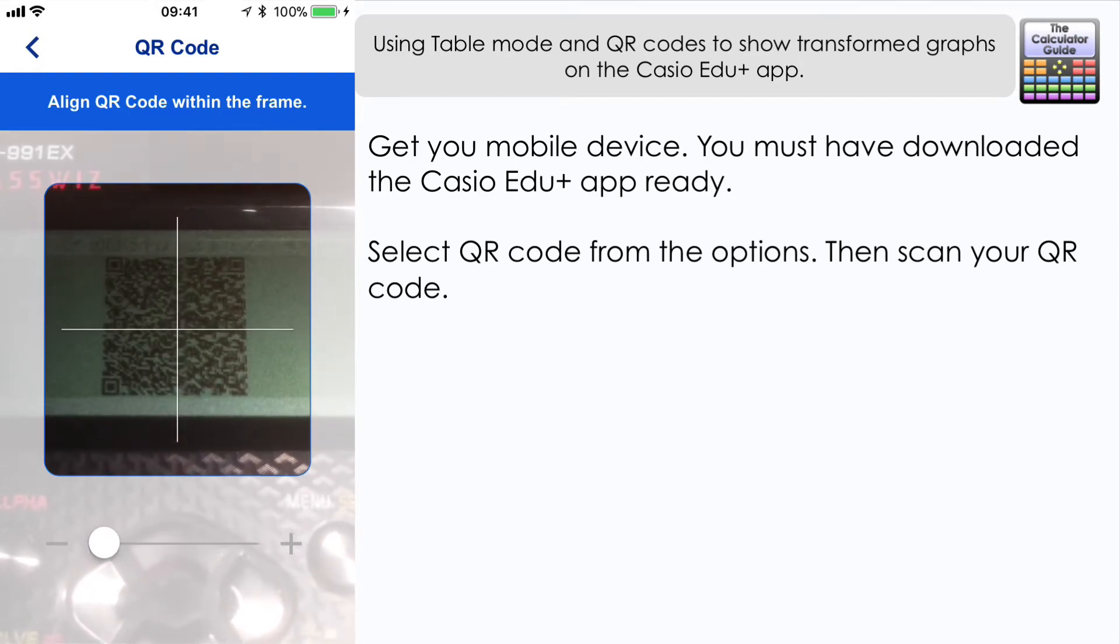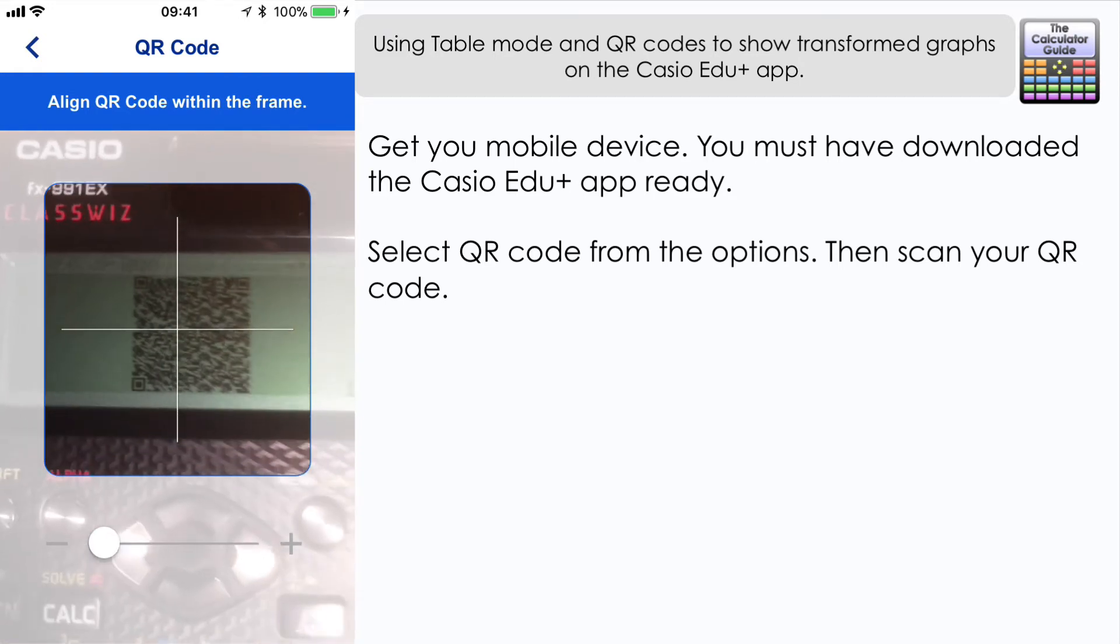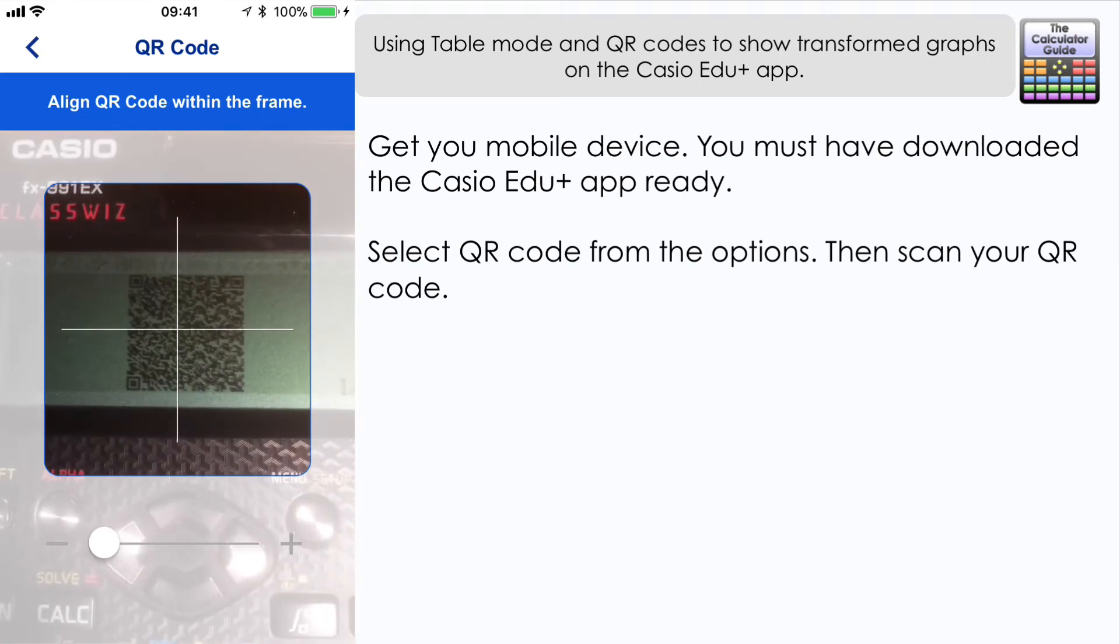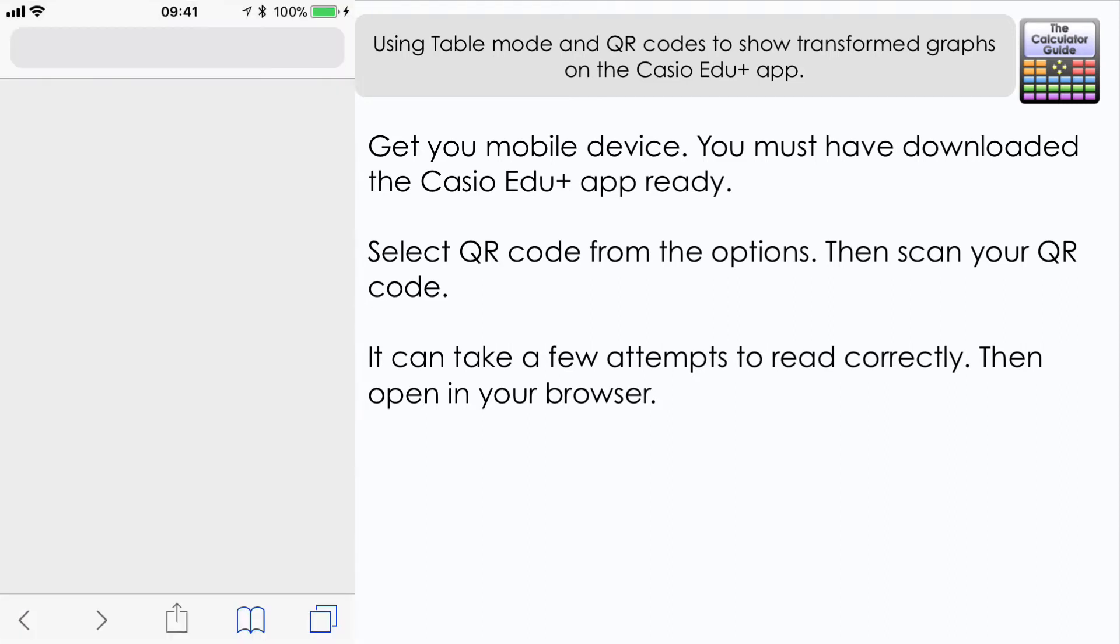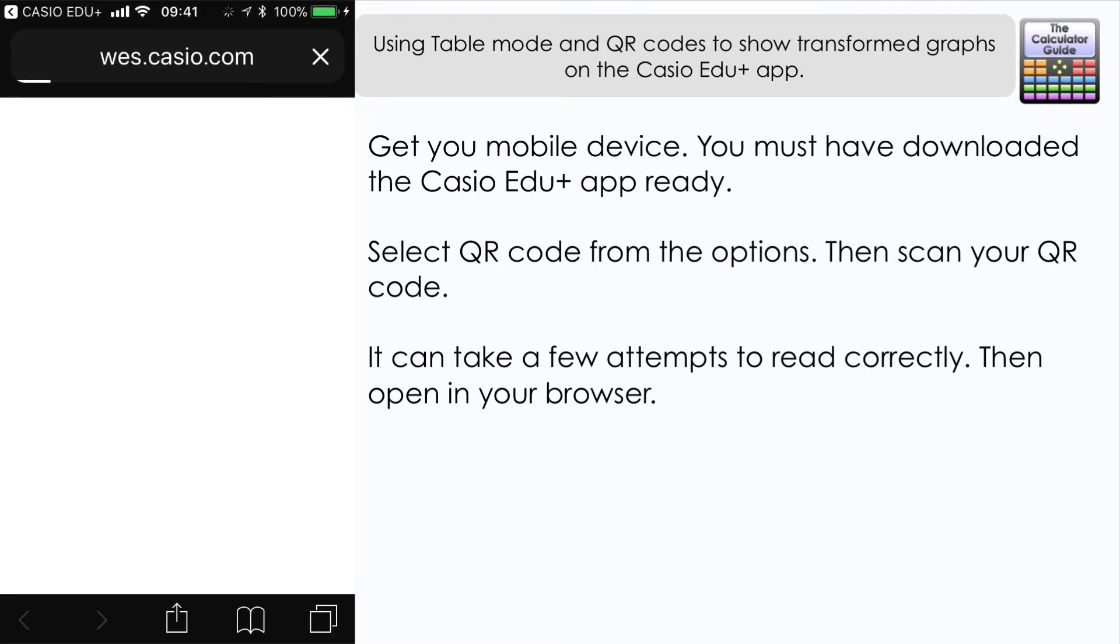It might take a few attempts sometimes to focus in on the QR code. Once it's scanned successfully then it brings up a link to open it in your browser, to open in Safari. And here we have the summary of our input, cosine x and cosine x over 2.